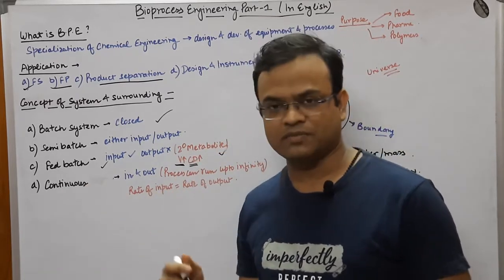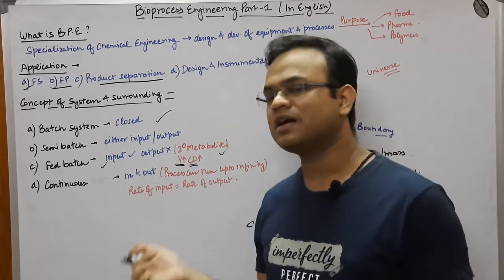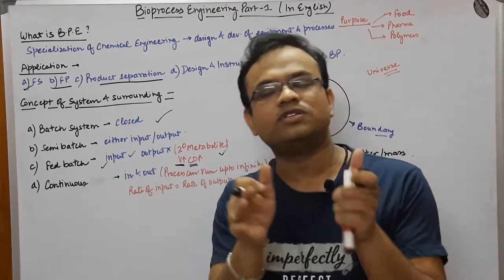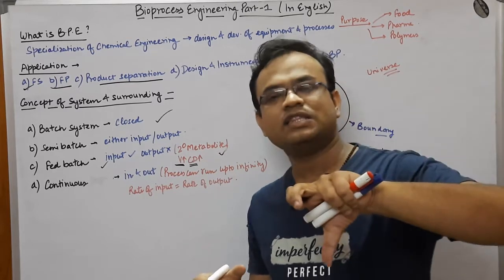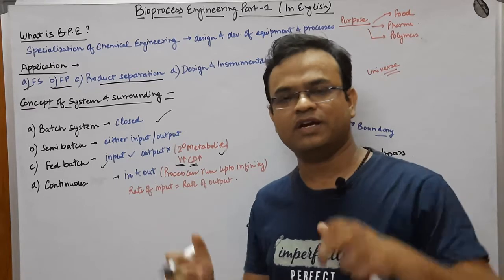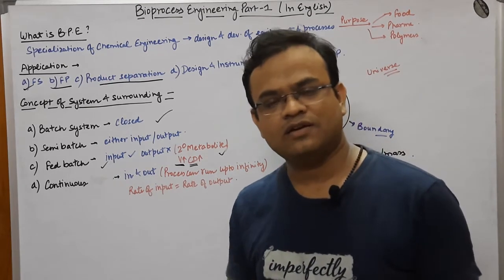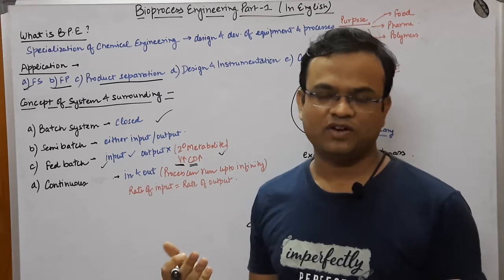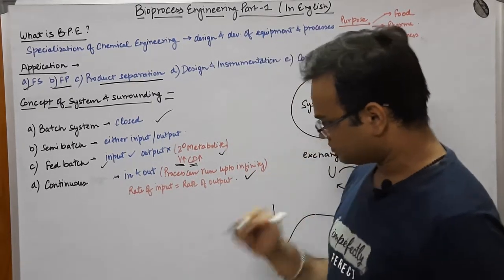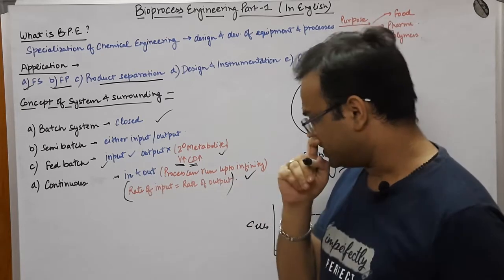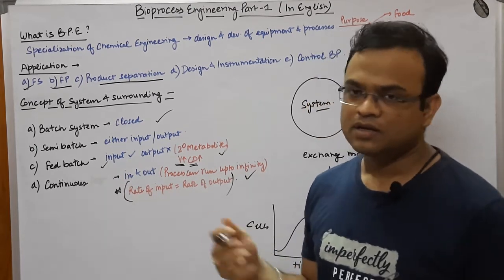Now coming to the continuous system. In the continuous system, you can pour in the media and also take out the media simultaneously — you can do both things at the same time. If the rate of putting in the media is equal to the rate at which you take out the media, then this process can run up to infinity because nothing stops it. We would discuss this topic in much more detail in upcoming lectures.